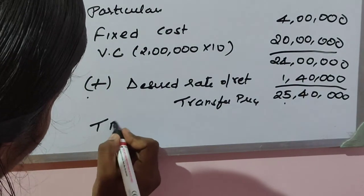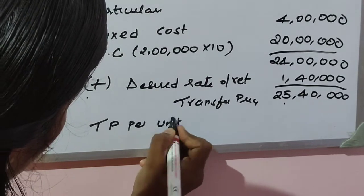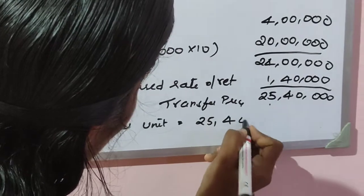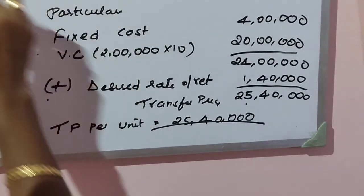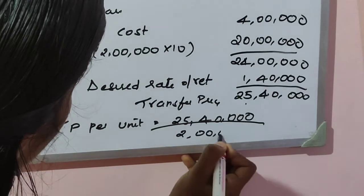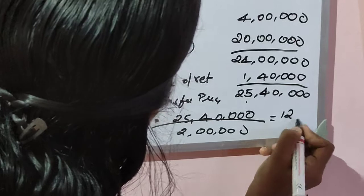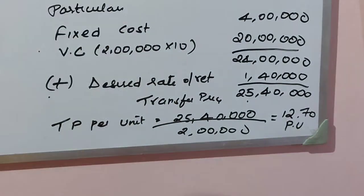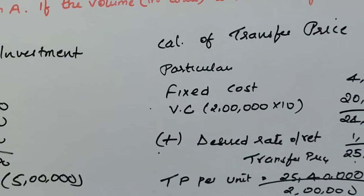Transfer price per unit is total transfer price of ₹25,40,000 divided by 2,00,000 units, which gives ₹12.70 per unit. That is the transfer price for Division A.